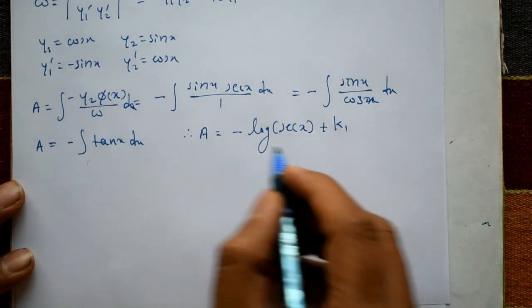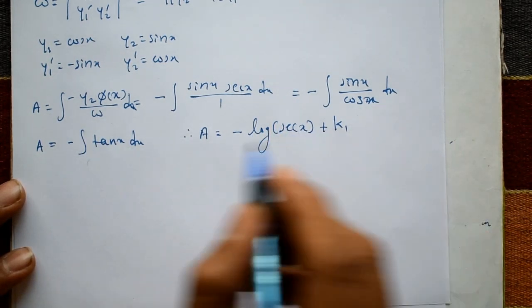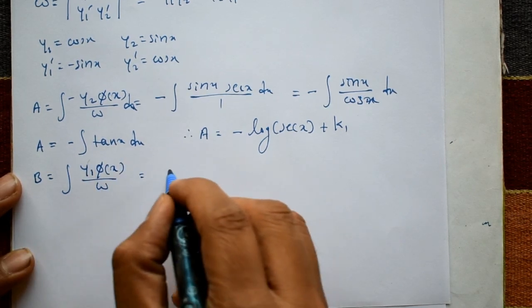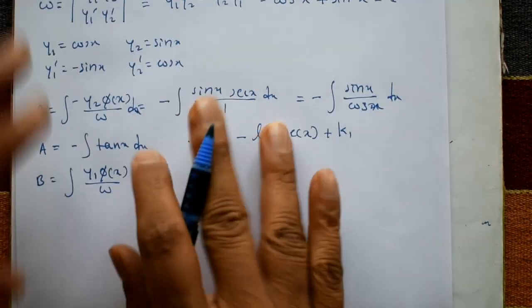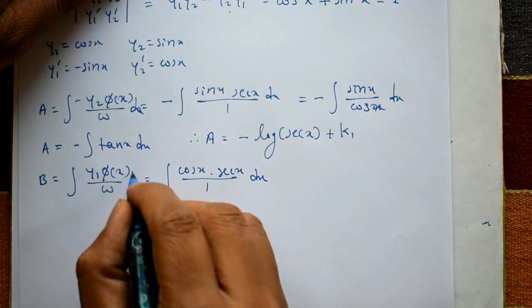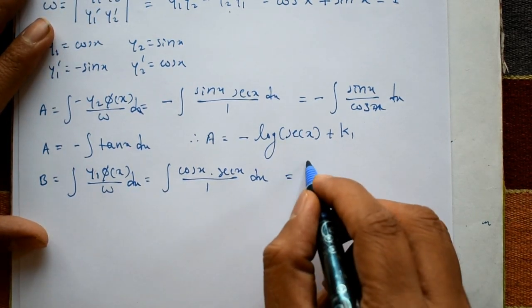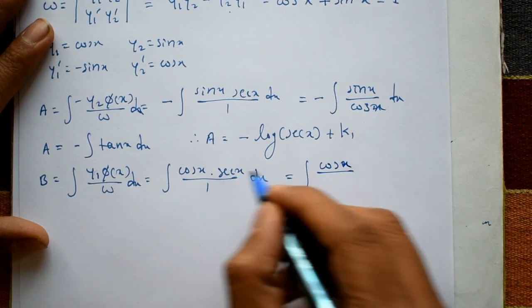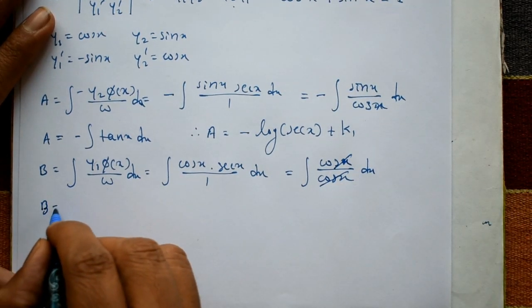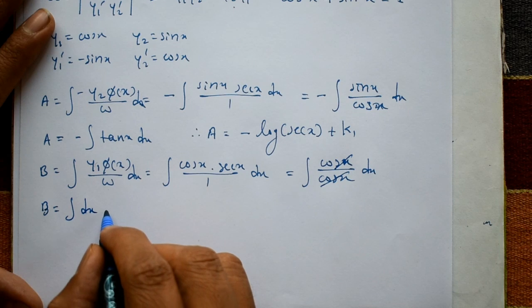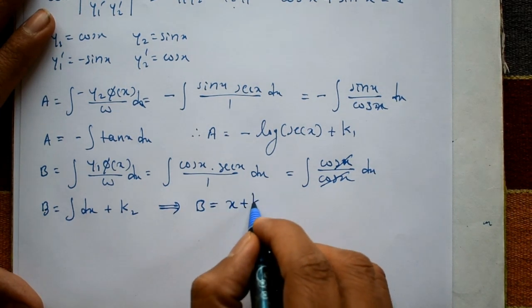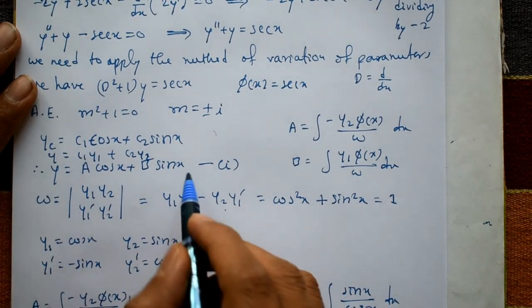After integration, a = -log|sec(x)| + k1. Now for b: b = ∫(y1·φ(x)/W)dx = ∫(cos(x)·sec(x)/1)dx = ∫(cos(x)/cos(x))dx = ∫dx. Therefore b = x + k2.